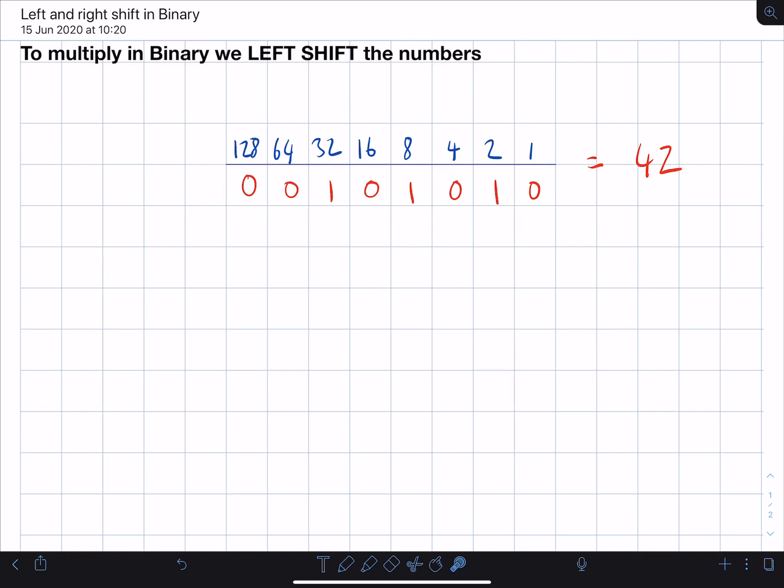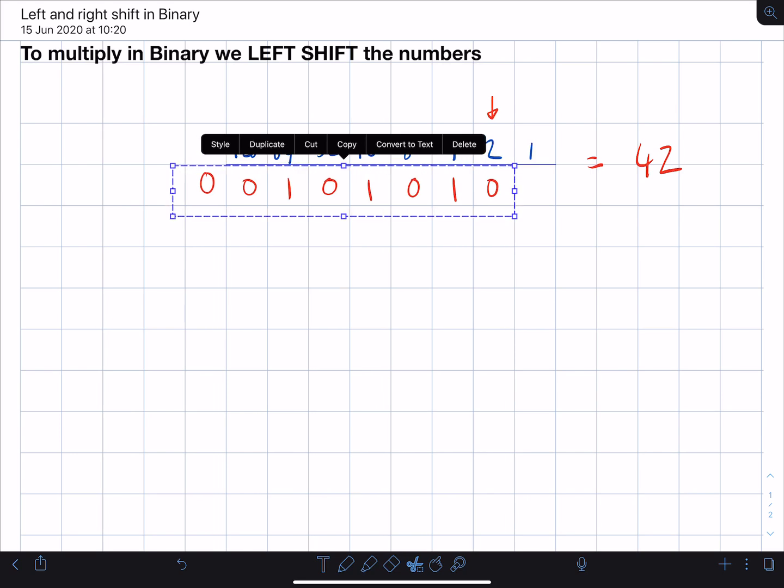Now, let's say we wanted to multiply this number by 2. What we need to do is shift it across or left shift it across by one set. So I'm going to grab our numbers here and just move them across there. You can see the last one now lines up with the 2. In this instance, what we need is another 0 in here because that's now blank.